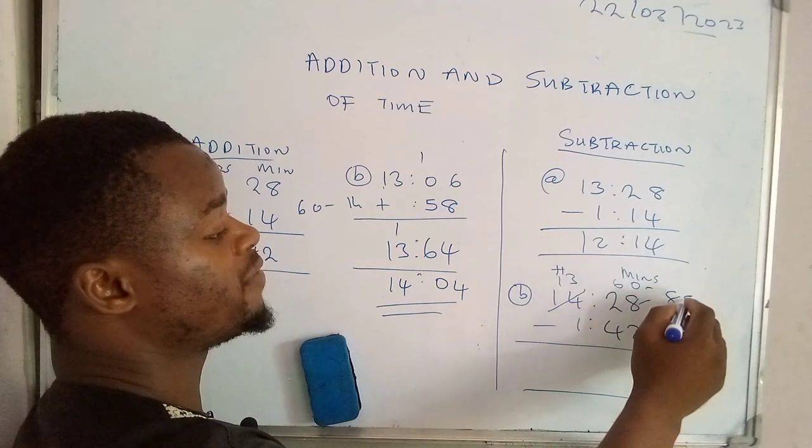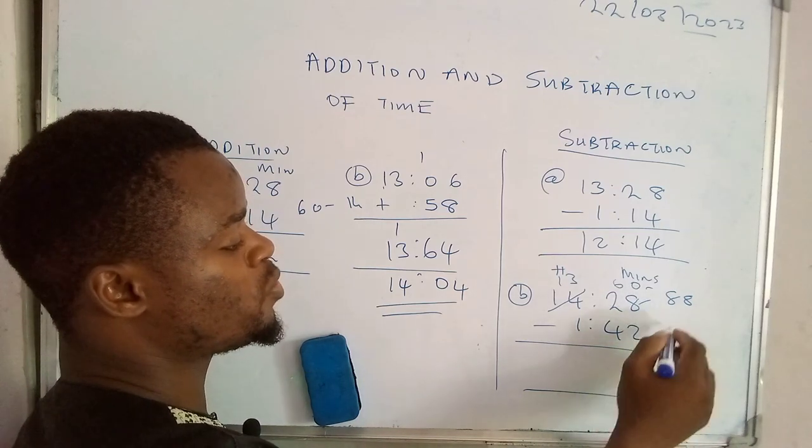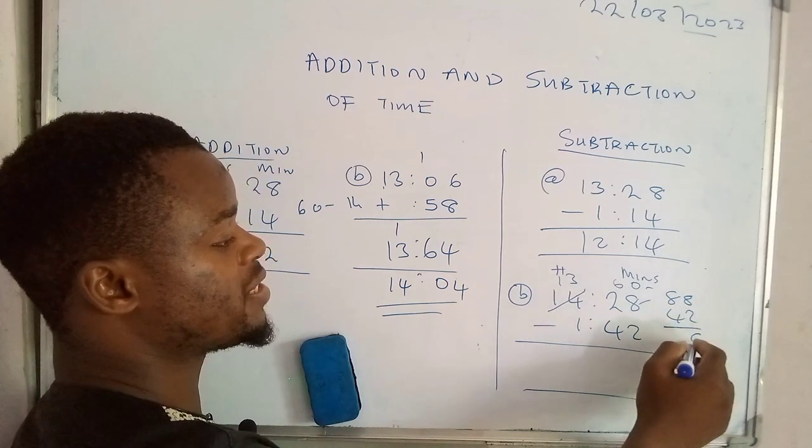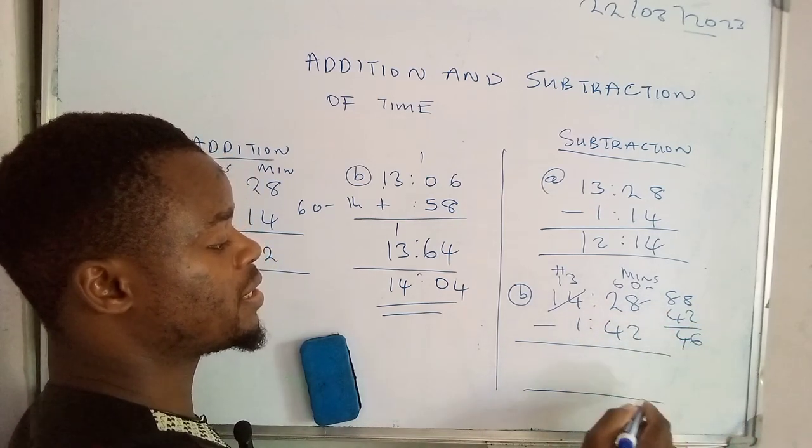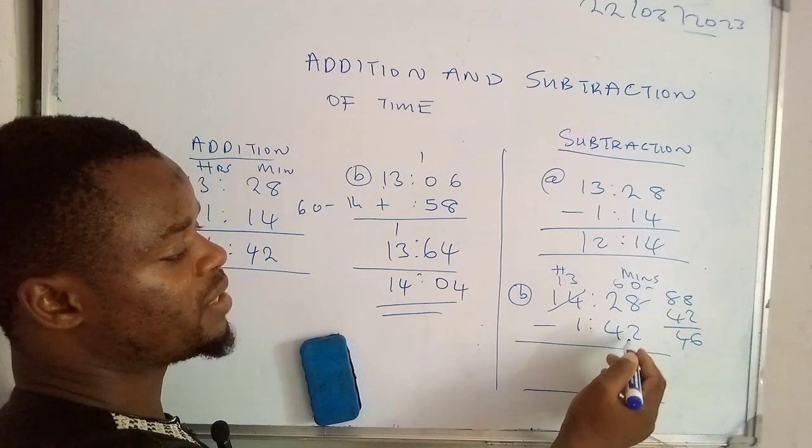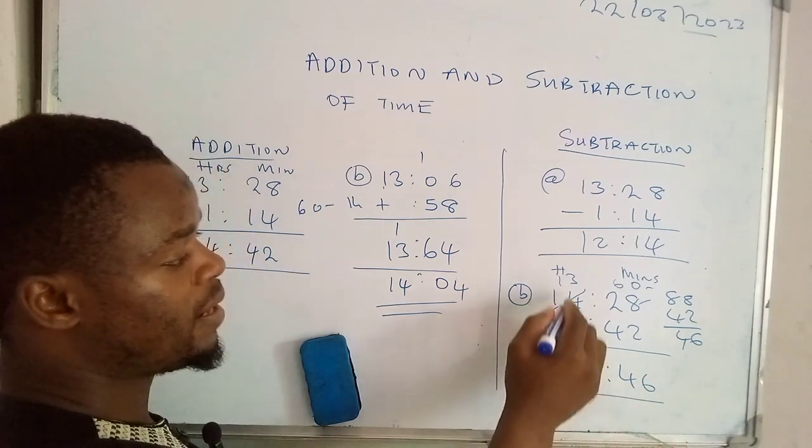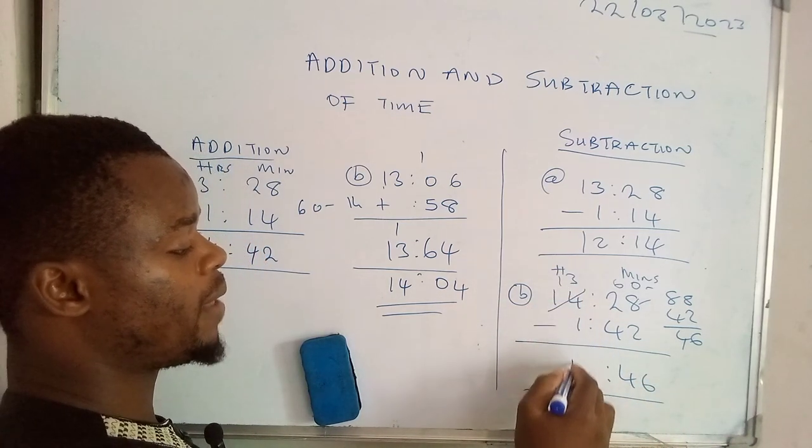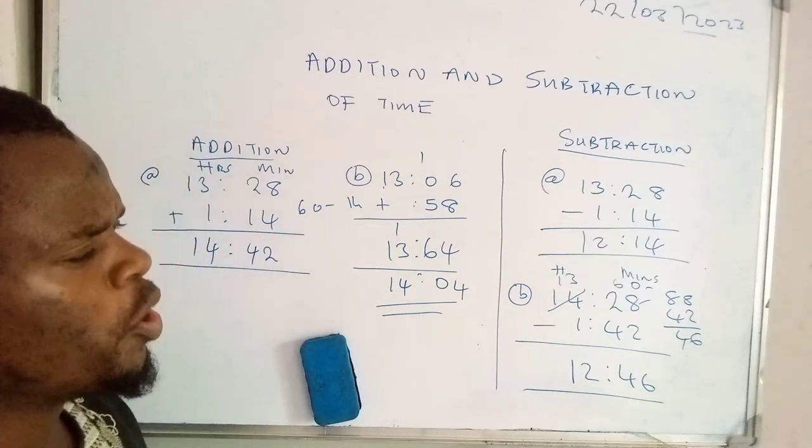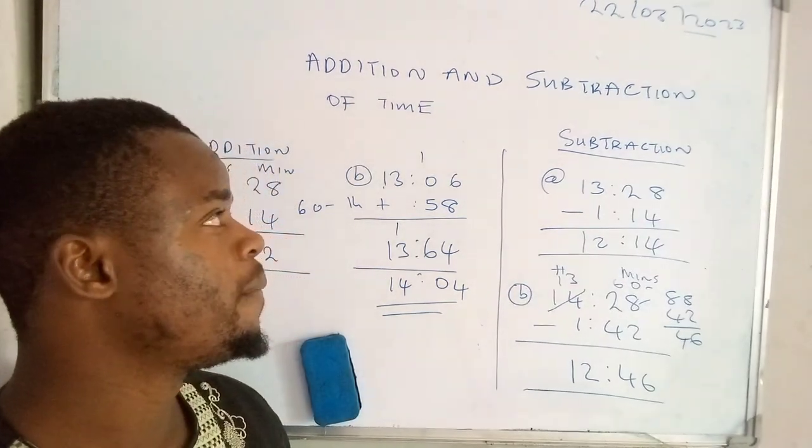So now 88 minutes, we subtract 42 minutes from those 88 minutes. So 8 minus 2, that's 6. 8 minus 4, that's 4. So 46. So now when we subtract these 42 minutes from 88 minutes, we're going to remain with 46 minutes. Now 13 minus 1 hour, that's 12. So 12:46. So friends, that's how we go about subtraction and addition of time.